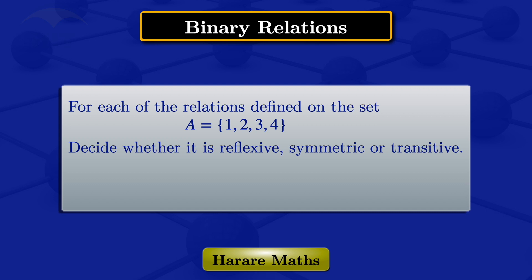In this video I'm going to look at relations defined on the set A = {1, 2, 3, 4}. The first relation has ordered pairs (2,4) and (4,2), and the second relation has ordered pairs (1,2), (2,3), and (3,4). For both relations I'm going to check if they are reflexive, symmetric, or transitive.